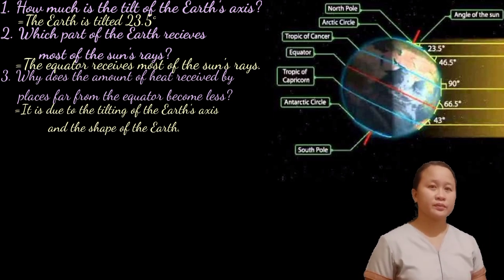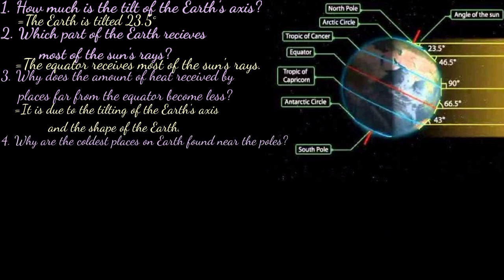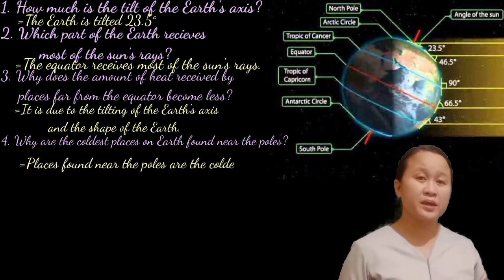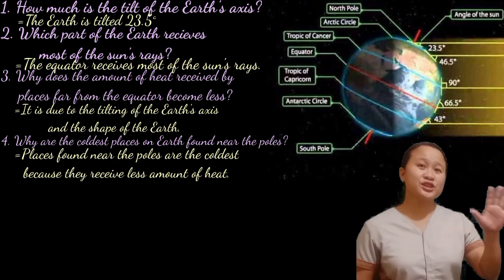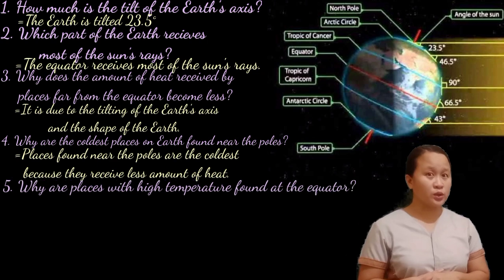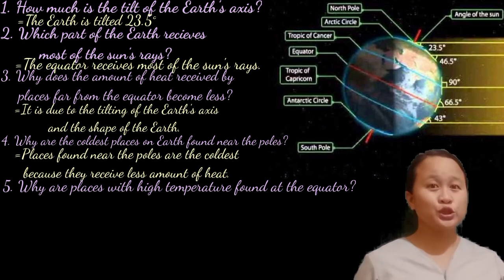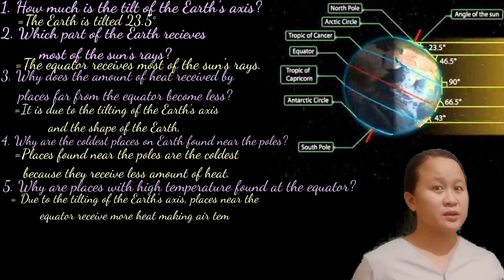Question number four: Why are the coldest places on Earth found near the poles? The answer is places found near the poles are the coldest because they receive less amount of heat. Question number five: Why are places with high temperature found at the equator? The answer is due to the tilting of the Earth's axis, places near the equator receive more heat, making the air temperature higher.